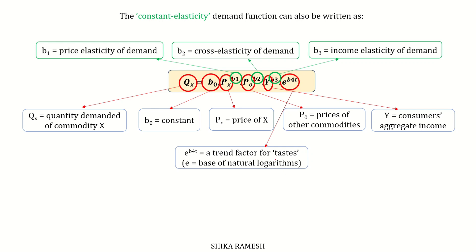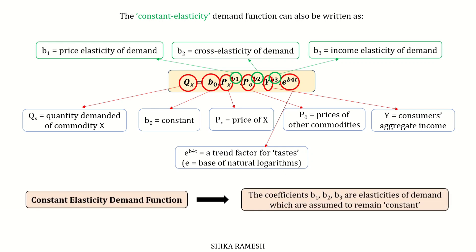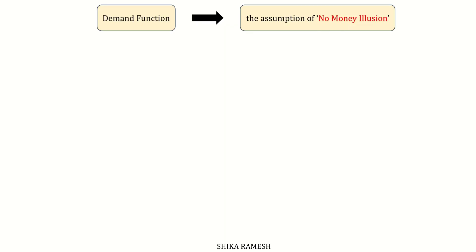In this equation, the coefficients b1, b2, and b3 are elasticities of demand which are assumed to remain constant, which is why it is termed the constant elasticity demand function. Usually, the pragmatic approach expresses the demand function so as to incorporate the assumption of no money illusion, postulated by the traditional theory of the consumer.